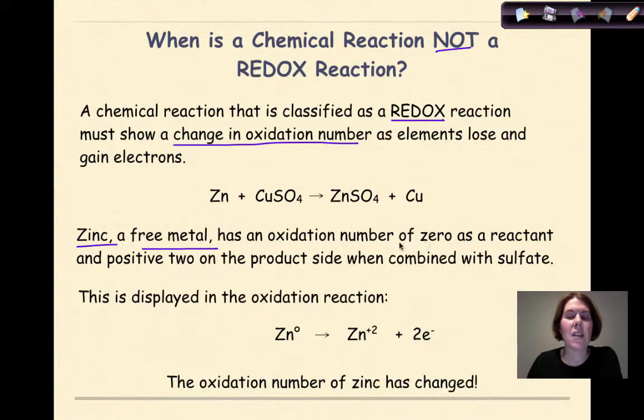Zinc, a free metal, has an oxidation number of zero as a reactant and positive two on the product side when combined with sulfate. I know that the sulfate is minus two as a polyatomic, therefore the zinc must be plus two. We can write an oxidation half reaction showing this: Zn⁰ yields Zn²⁺ plus two electrons being lost. In other words, the oxidation number of zinc has changed. It's gone from zero to plus two.